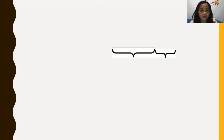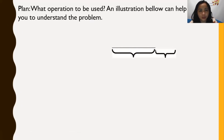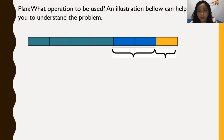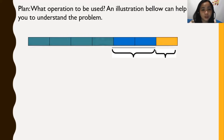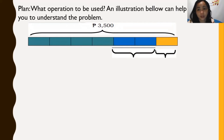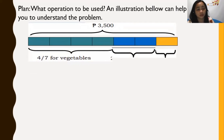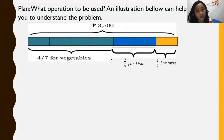Let's draw an illustration. We have here 7 parts, because the budget is divided into 7 parts. This whole part is P3,500 — the entire budget — divided into 7 parts. The 4/7 goes for vegetables, the blue 2 parts or 2/7 goes for fish, and what remains will go for meat.